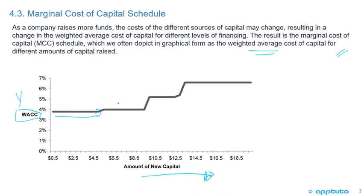As more capital is added, the weighted average cost of capital goes up at each step, because as more funds are raised, the cost from the different sources of capital may increase.